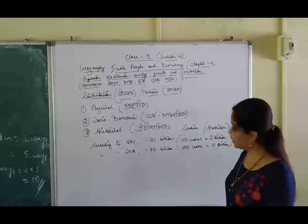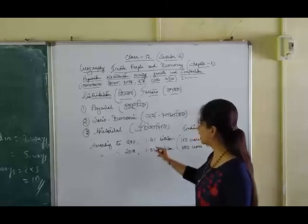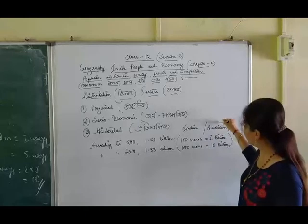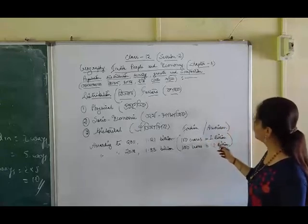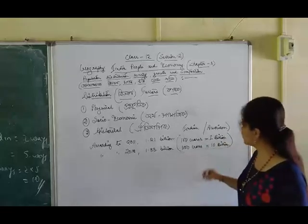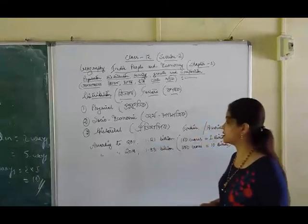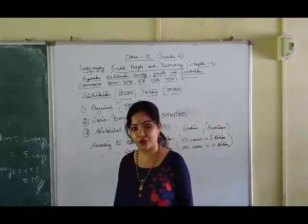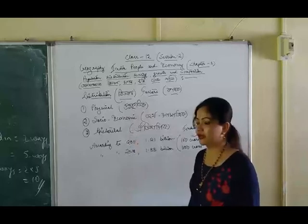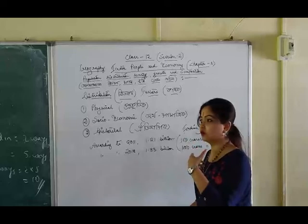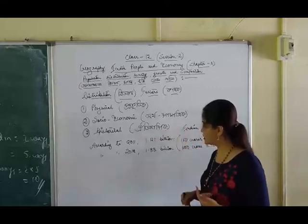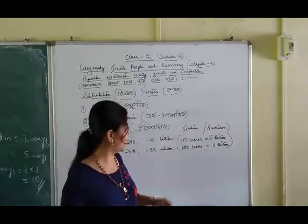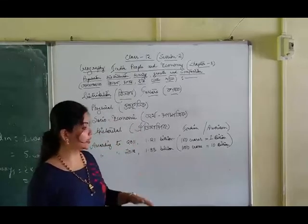According to the 2011 census, the population of India was 1.21 billion. Do not be confused — this billion is in American terms. In Indian terms, 100 crores equals 1 billion and 1,000 crores equals 10 billion. According to 2011 census, the population of India was 1.21 billion. According to 2018 estimates, it had crossed 1.33 billion. We have our big census in 2021. This is what we take to the end of this session number 2.